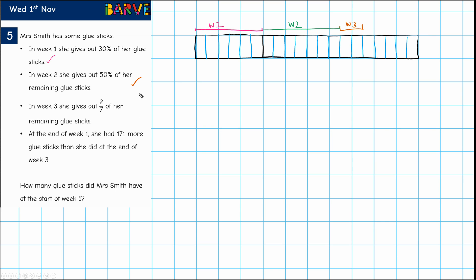We've included all of this information. Now at the end of week one we're told she had 171 more glue sticks than she did at the end of week three. Let's have a look at this. What's at the end of week one? This is what she gave out at week one, this is what she had. This is the end of week one. What did she have at the end of week three? That's this here, this is the end of week three.